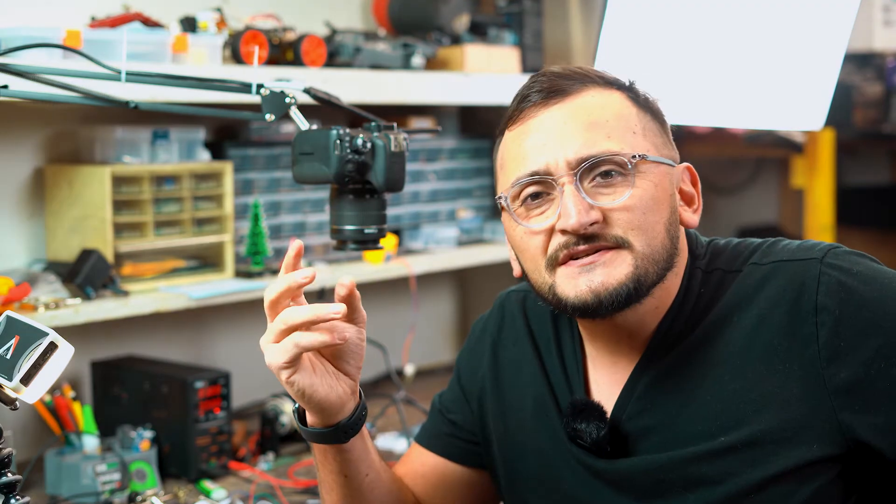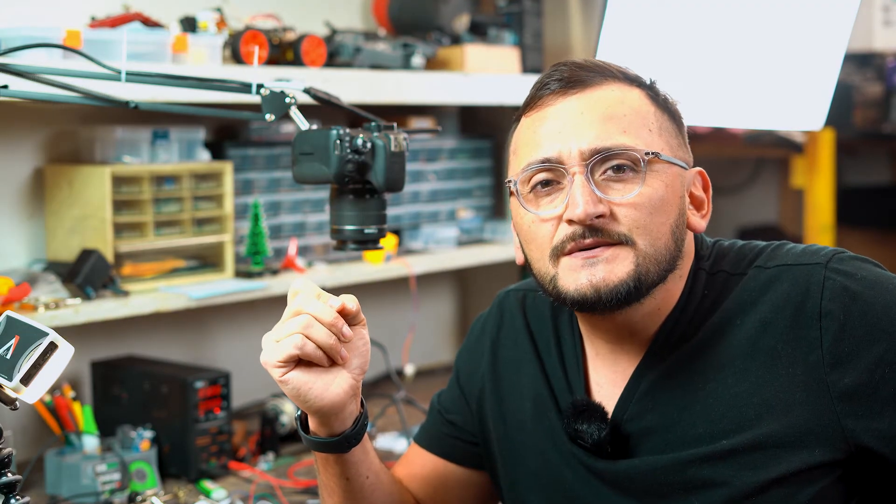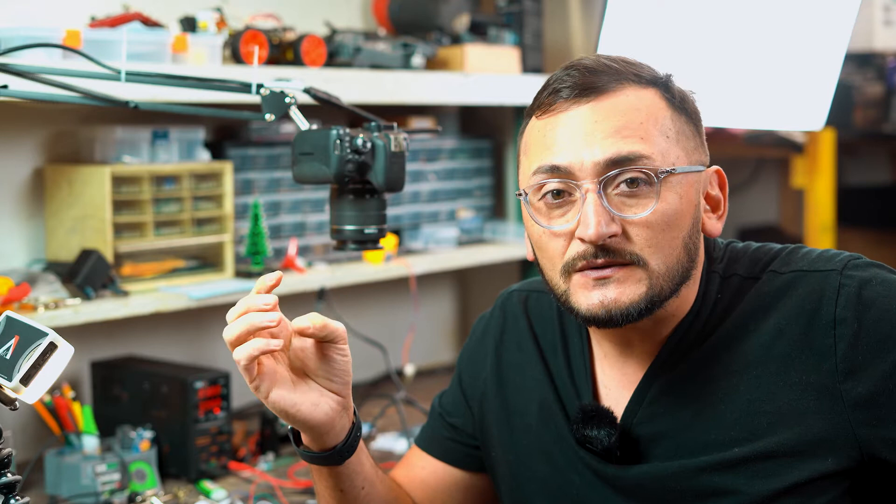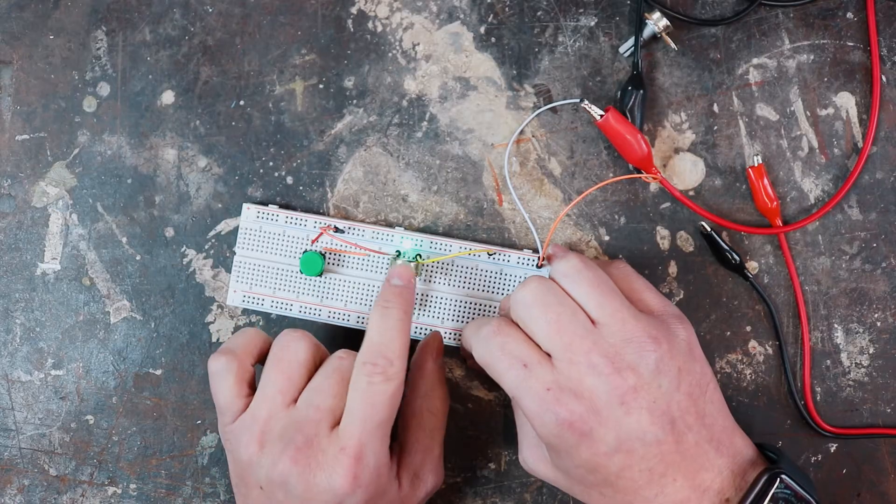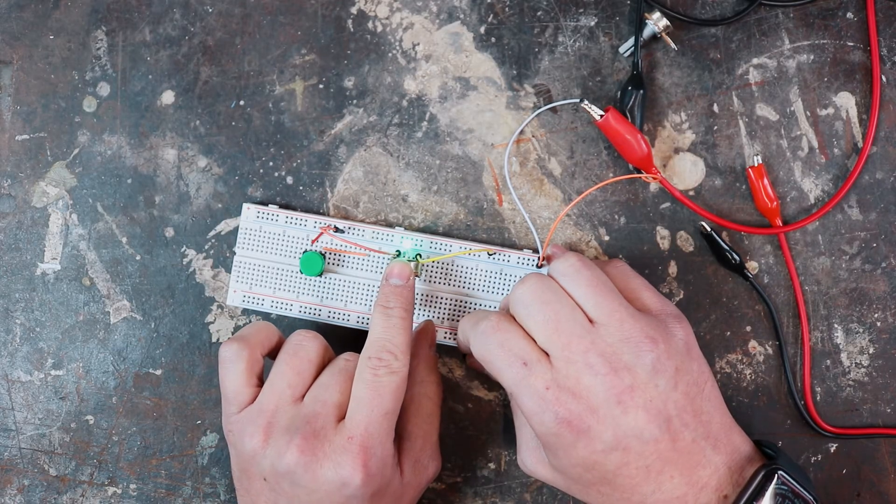So what is Pulse Width Modulation? Pulse Width Modulation allows us to use a digital signal to control analog devices. This potentiometer is modulating the resistance, which